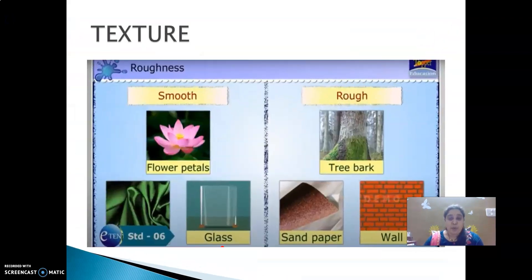The next property is texture. Certain materials are smooth, whereas some others are rough to touch. For example, flower petals, silk cloth, glass are smooth to touch. Whereas tree bark, sandpaper, unfinished wall are rough to touch.